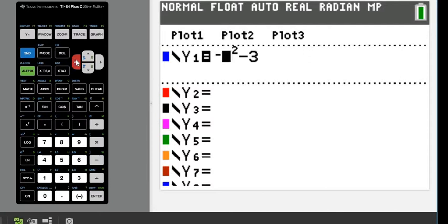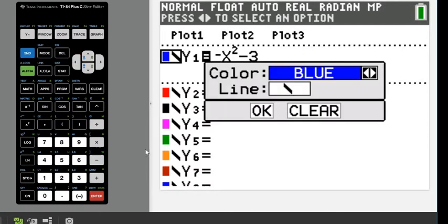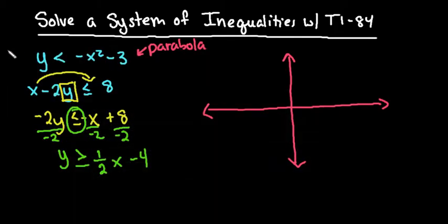Then I'm going to scroll over to the left hand side. If you have the color edition, this menu will come up where you could change the color, and you can also make it shade above or shade below. To tell which way you're going to do, look at your sign here. Because this is less than, this tells us that we're going to shade below the parabola.